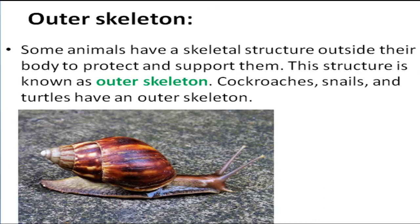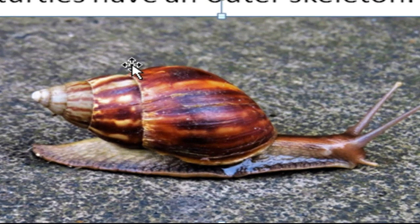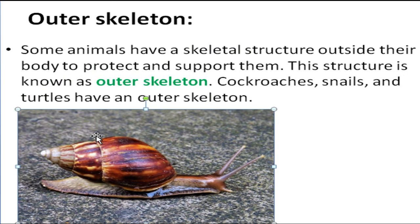Our next keyword is outer skeleton. Some animals have this skeletal structure outside their body to protect and support them. This structure is known as outer skeleton. For example, cockroaches, snails, and turtles have an outer skeleton.